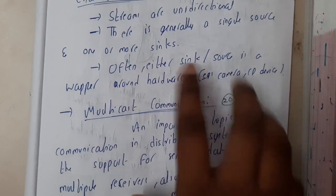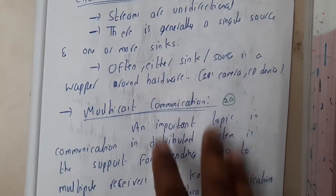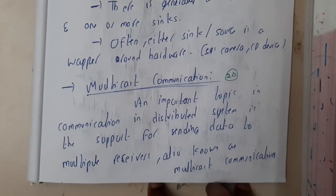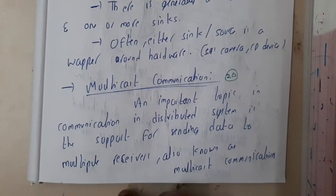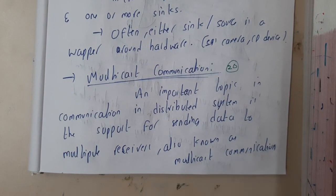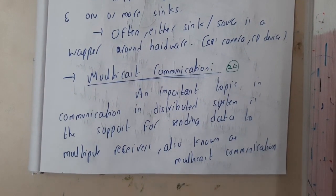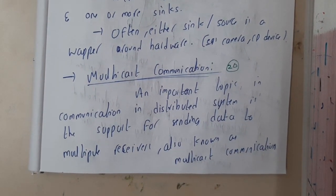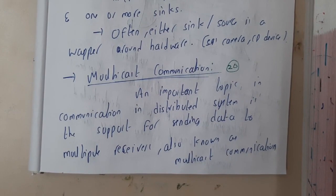Often either the sink or source is a wrapper around hardware — basically any kind of hardware. I hope everyone got some basic idea about stream-oriented communication. In the next lecture, we will be going through a basic introduction about multicast communication. Thank you, thanks for watching.